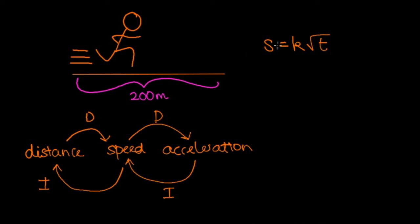In our example we have distance given as a function of time. Let's say the runner finishes the race in 25 seconds — so he covers 200 meters in 25 seconds. That's going to allow us to work out the value of k.